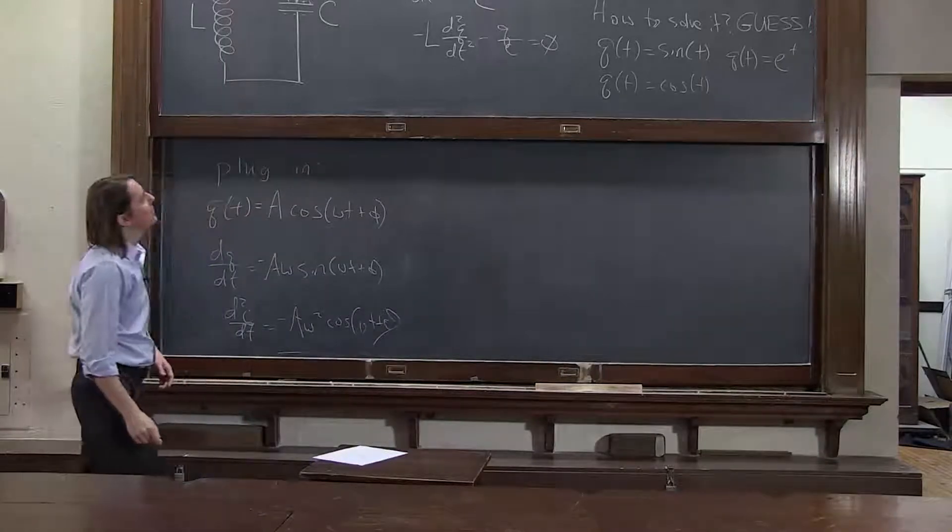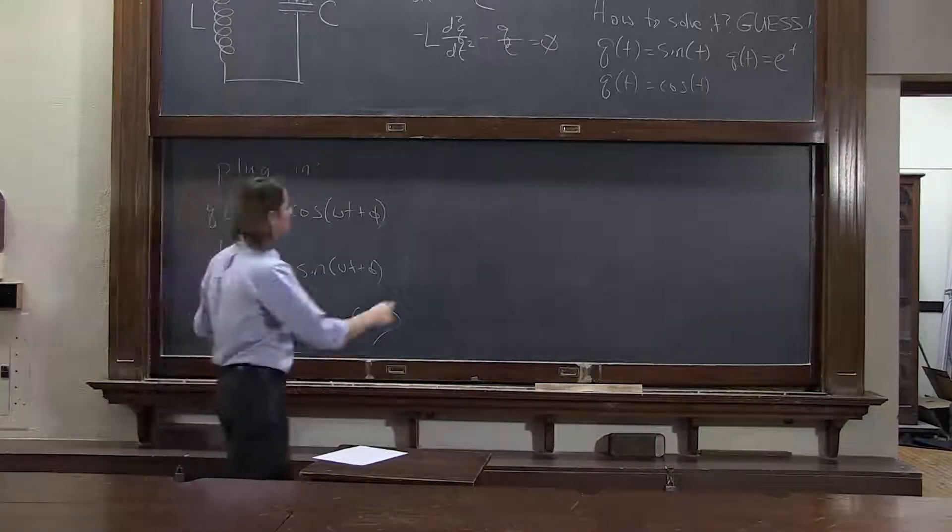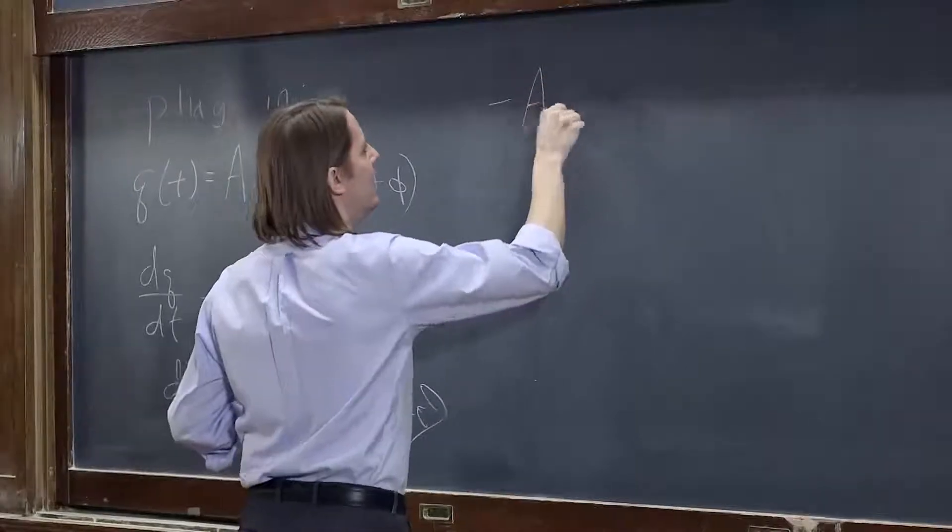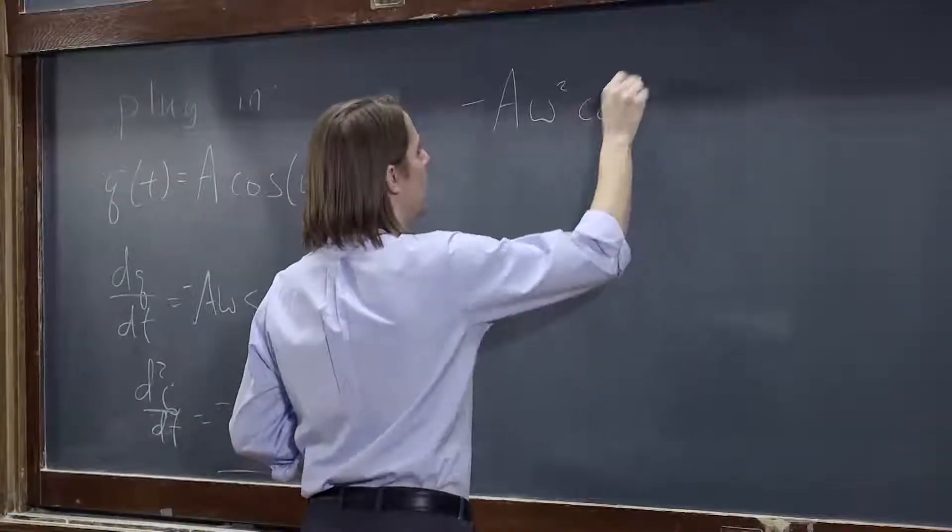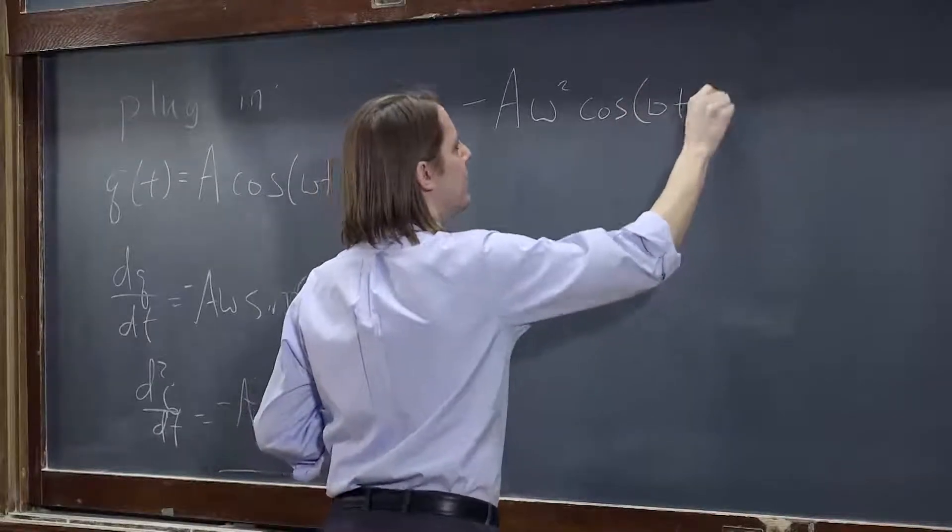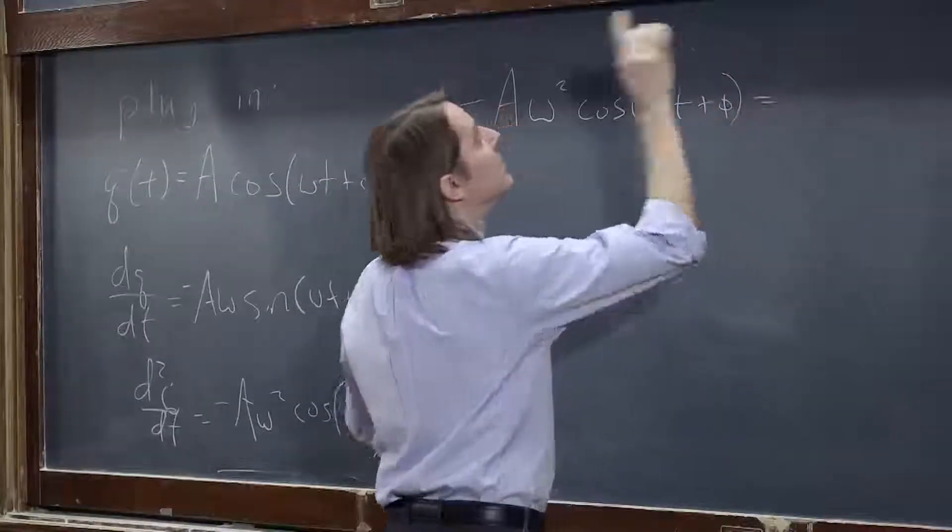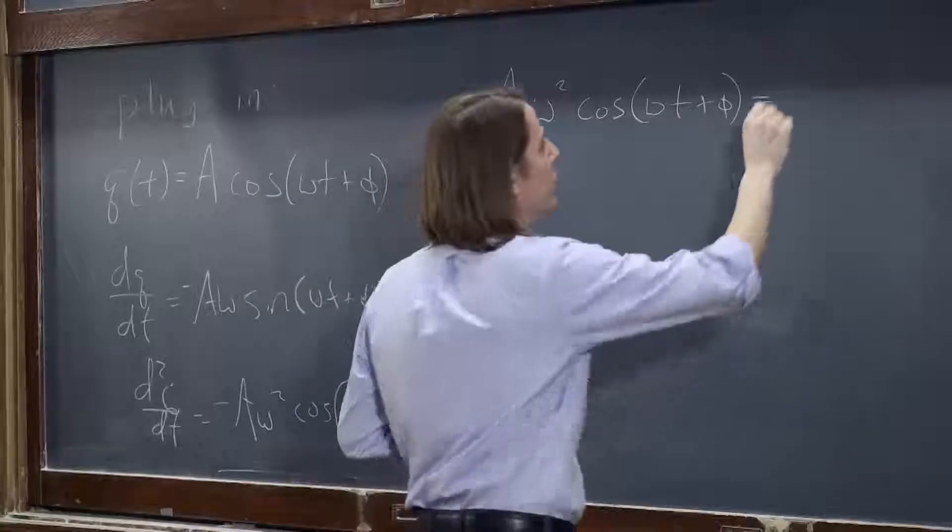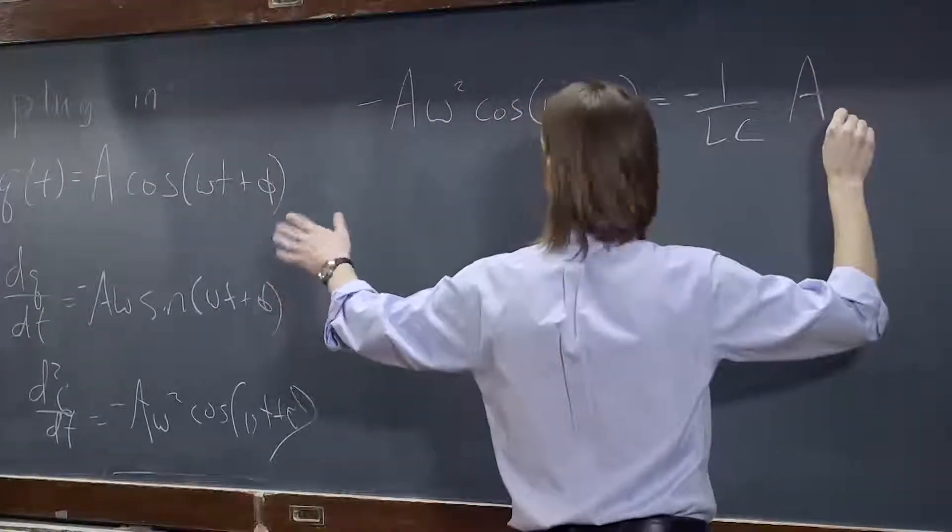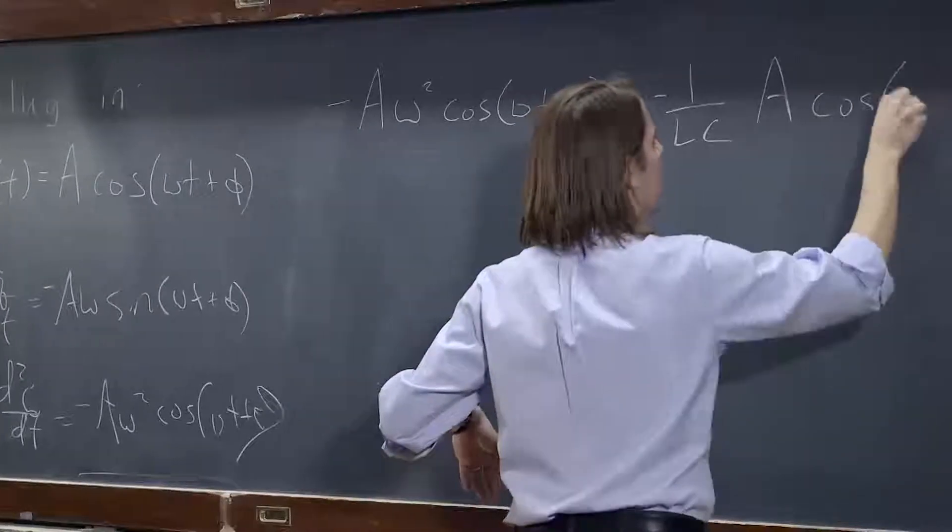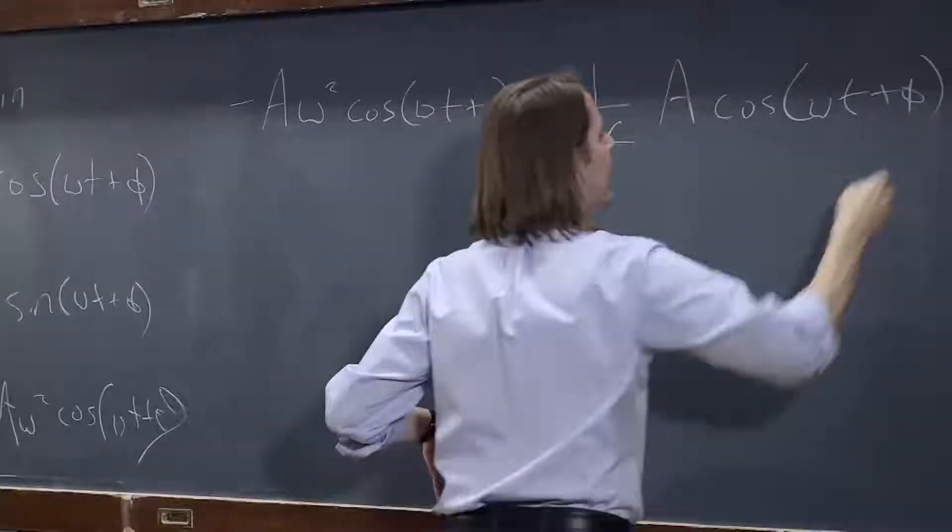Now plug it in. Let's see, d²q/dt² is minus A omega squared cosine omega t plus phi. So that's the d²q/dt² equals minus 1 over LC, and then the function A cosine omega t plus phi.